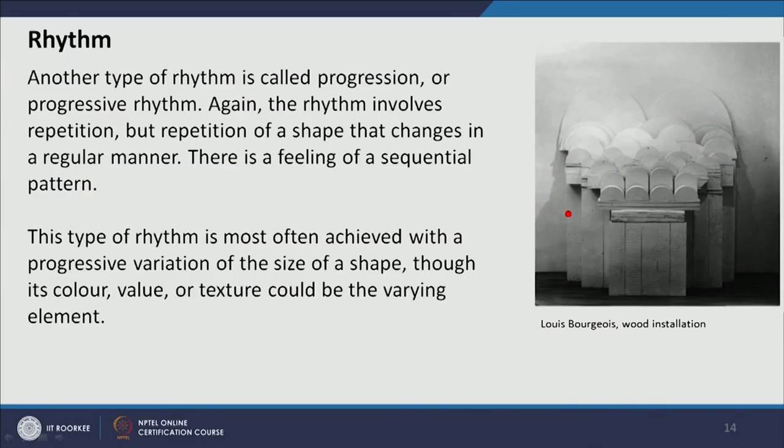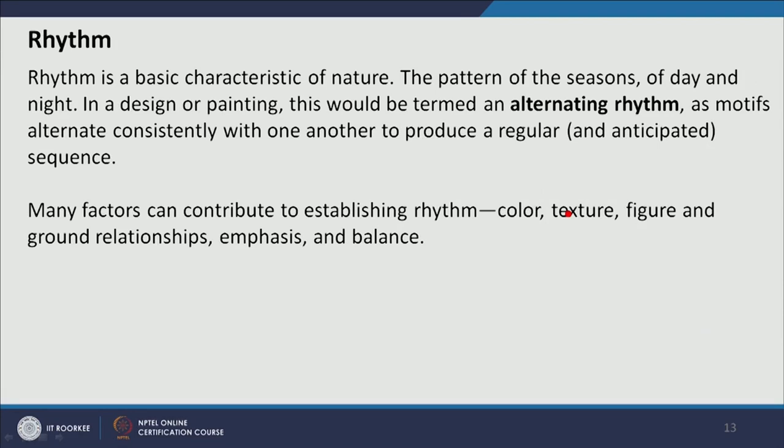The next principle of design is rhythm. Rhythm involves repeating the same or similar elements of design repetitively to create a rhythm or rhyme in the composition — creating harmony and unity. In rhythm we have alternating rhythm and progressive rhythm. In alternating rhythm, two or three different objects are repeated in a proper sequence — for example, first, second, third, and again first, second, third.